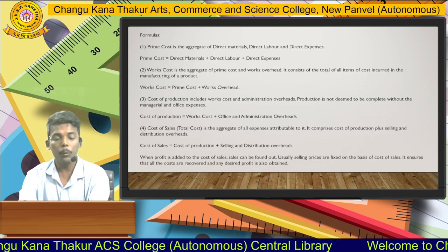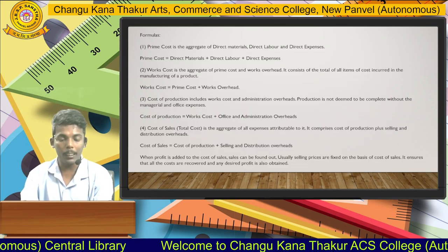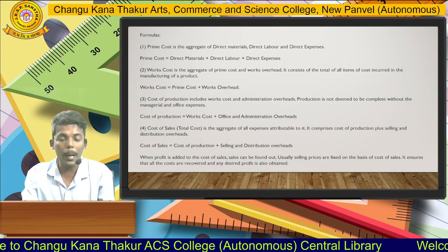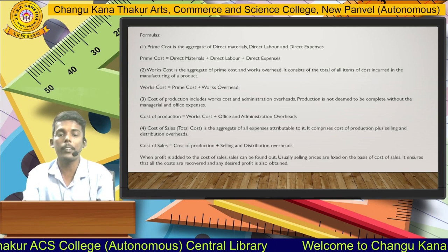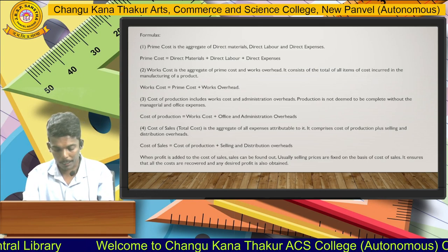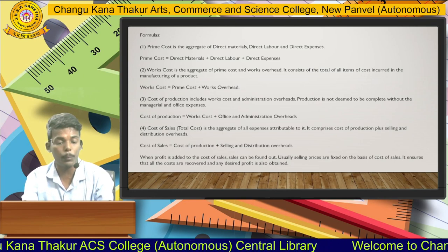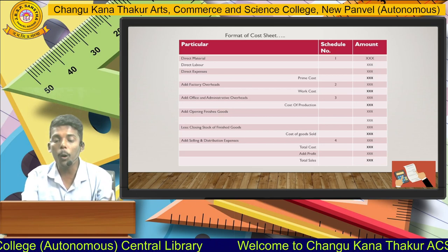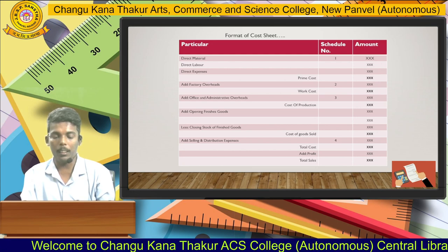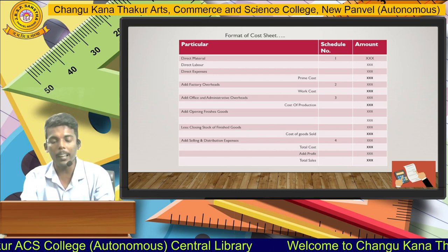I am presenting the formulas, because the cost sheet is entirely dependent upon some formulas. These formulas are very important for the preparation of the cost sheet. The first and most important concept is prime cost. Prime cost is the basic cost — it is the primary cost and it is the aggregate total of direct material, direct labor, and direct expenses. In the first part of the cost sheet format, we record the amount of direct material, direct labor, and direct expenses. The aggregate total of these three is equal to prime cost.